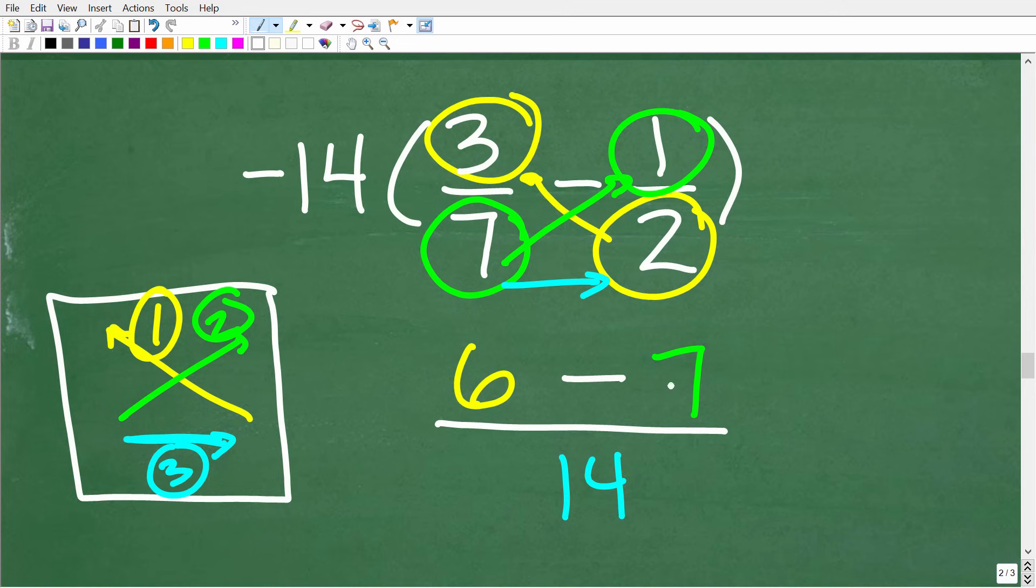All right, so 6 minus 7, again, is negative 1 over 14, which, of course, is the final answer. But if you notice here, I didn't do anything with the LCD. I didn't have to think about that. I just simply took these steps. Now, of course, I have this negative 1 fourteenth. The final answer is take this negative 14 and multiply it by this.